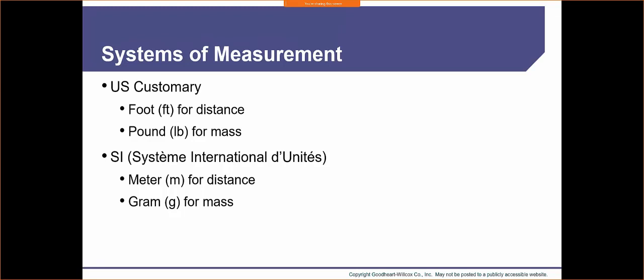Here in the U.S. we use the standard system. We're going to use the foot and the pound — the foot measures distance, the pound measures mass or weight. We also have the international system, which is metric, measuring everything in meters or grams. It's a really cool system. I sort of like it; I wish we implemented it here in the States. Unfortunately, we're stuck on standard.